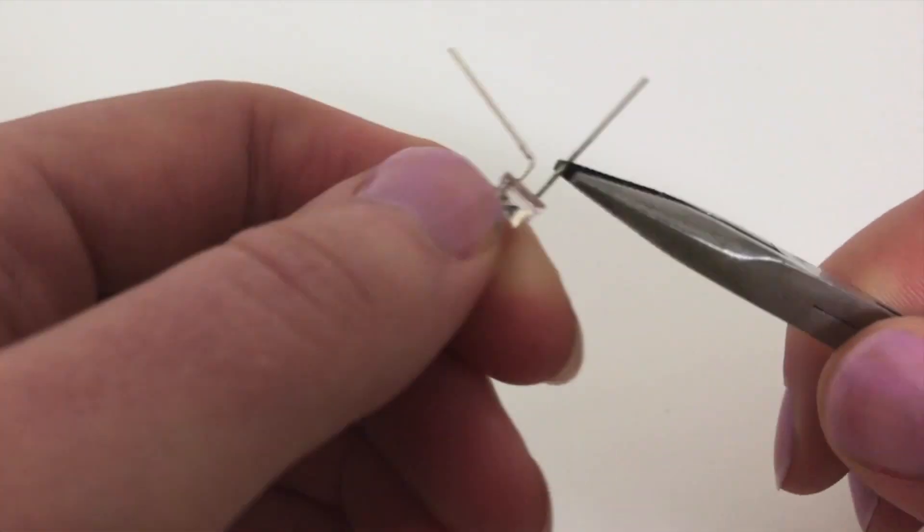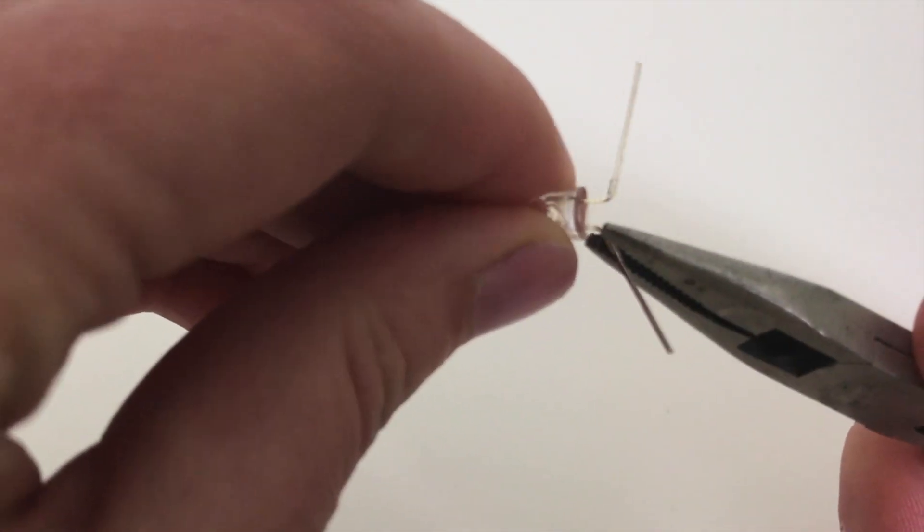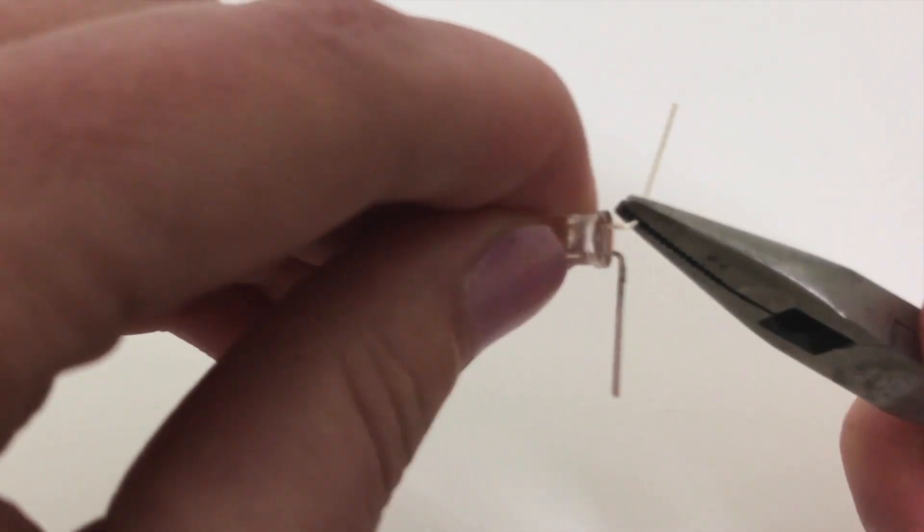If you prefer not to solder, repeat the first steps and turn the posts at 90 degree angles. This time, don't trim the ends.